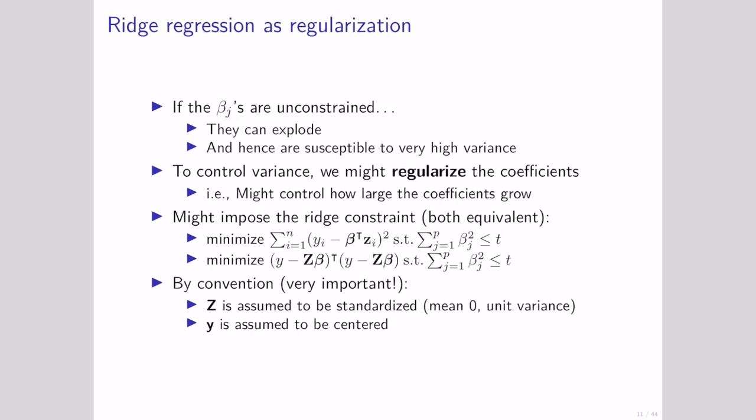Ridge regression uses the same equation as ordinary least squares, except we're going to limit our terms to be smaller than some value. This is completely equivalent to ordinary least squares with a different equation, again with our beta terms being limited to be smaller than some value. One important thing: when we talk about ridge regression, we're going to take all our input values and standardize them so they have a mean of zero and unit variance. This puts inputs on really different units onto the same scale.